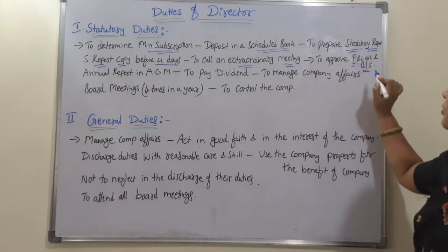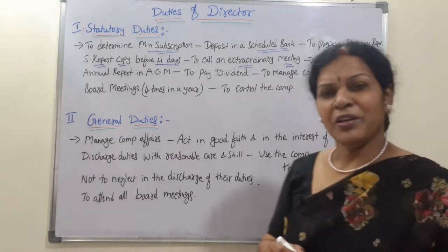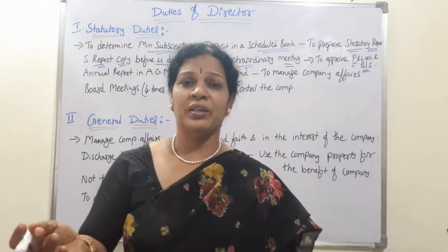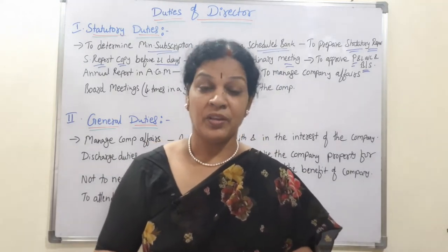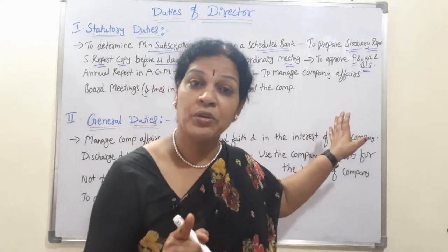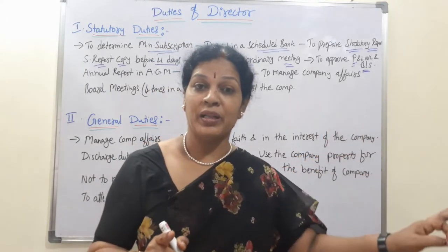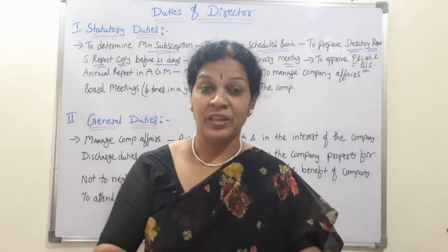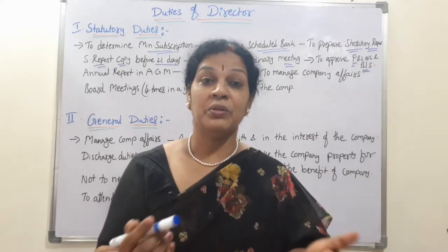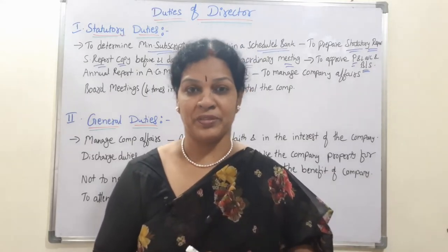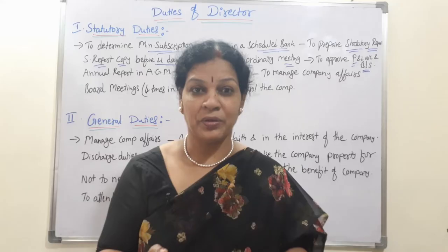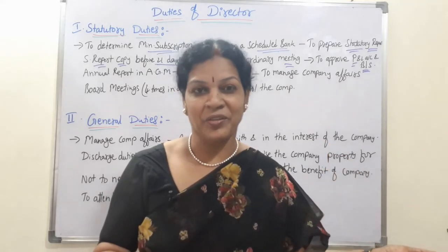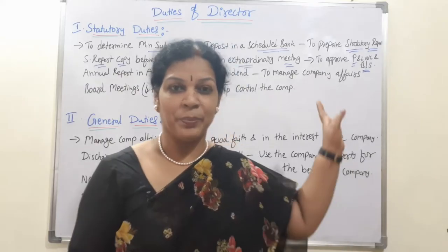The fifth statutory duty is to approve the profit and loss account and balance sheet. These two documents are compulsory in accounts and form the basis for all financial reporting. The director must approve the profit and loss account and balance sheet, and only after his approval are they handed over to the auditor for auditing purposes.